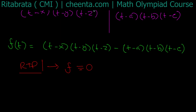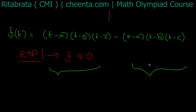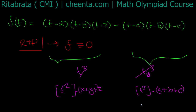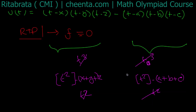Now let's look at the coefficients. The coefficient of t³ is 1 in both polynomials, so the t³ terms cancel. The coefficient of t² is −(x + y + z) in the first and −(a + b + c) in the second, and since x + y + z = a + b + c, the t² terms also cancel. The constant terms are xyz and abc respectively, which are also equal, so they cancel too.